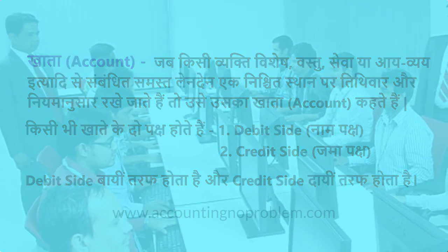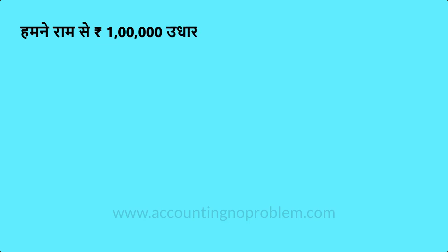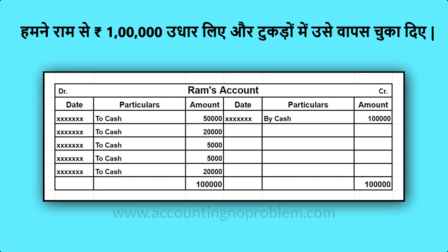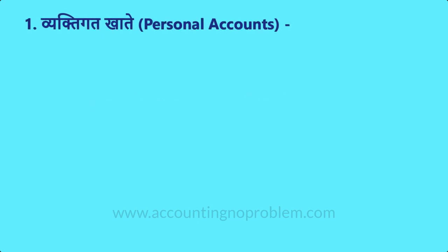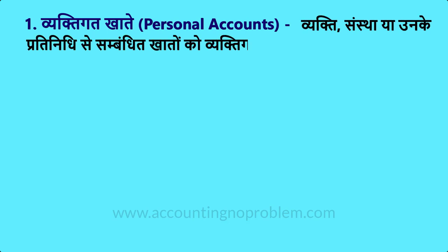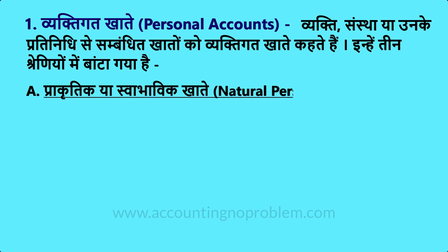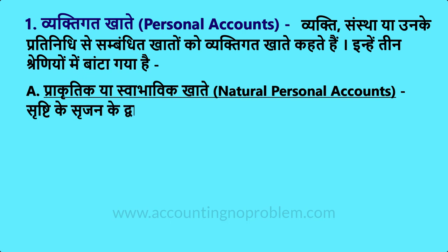हम इसे एक उदाहरण से समझ लेते हैं — जैसे हमने राम से एक लाख रुपये लिए, तो उस लेन-देन को Debit Side पर दर्ज किया जाएगा. खातों के तीन प्रकार होते हैं. पहला है Personal Accounts यानि व्यक्तिगत खाते, जिनमें व्यक्ति, संस्था, या उनसे संबंधित खाते आते हैं. Personal Accounts तीन प्रकार के होते हैं. पहला है प्राकृतिक या स्वाभाविक यानि Natural Personal Accounts.